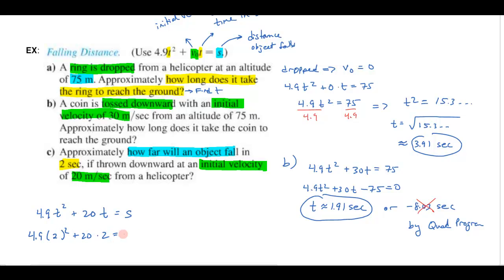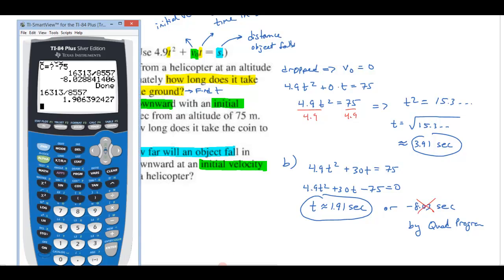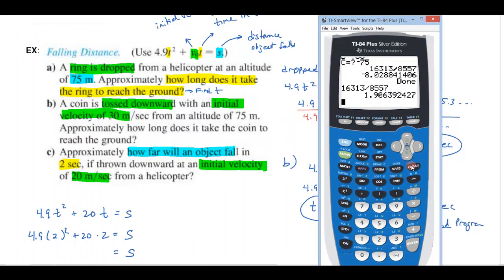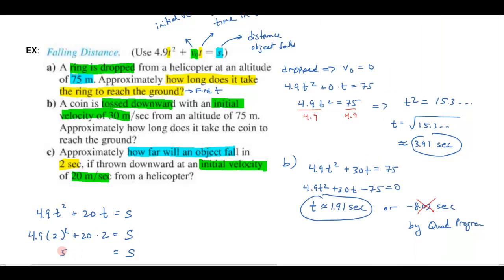So 4.9 times the 2 squared plus 20 times the 2, that's going to tell me how far it's going to go. So my S value is going to be, let's do this again on my calculator just so I don't make a mistake in my head or something like that. That'll be 4.9 times 4, 2 squared is 4 I can do that in my head, plus 40, 20 times 2 is 4, about 59.6 and that is in meters I believe.